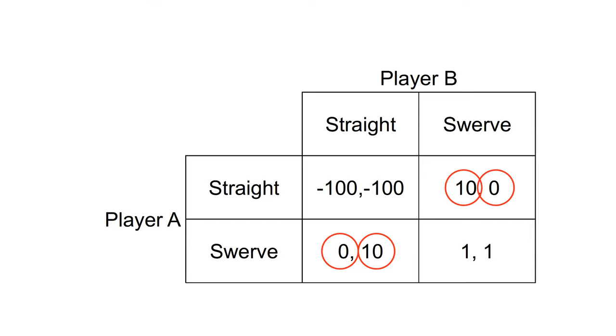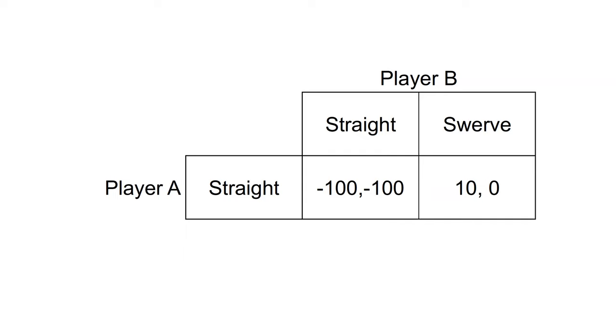Now suppose player A is crazy. They're afraid of nothing and will never swerve. Player B knows this. Player A's craziness acts as a commitment device similar to that of removing the steering wheel. If player A will not swerve, player B will. The Nash equilibrium is straight swerve. The crazy player A wins the game of chicken.